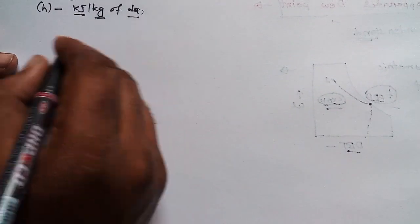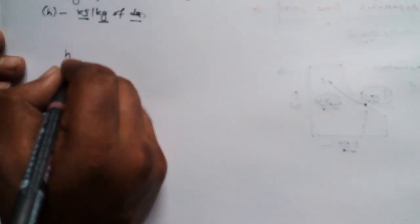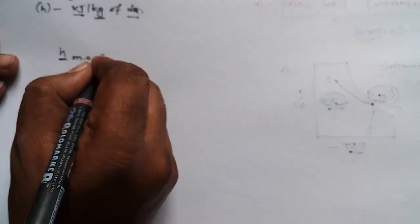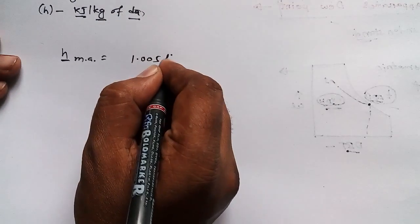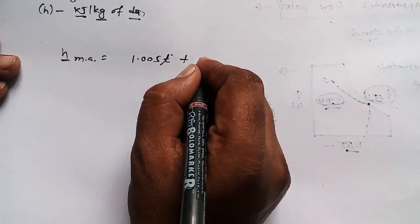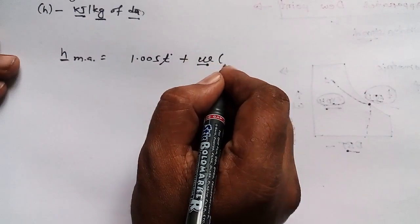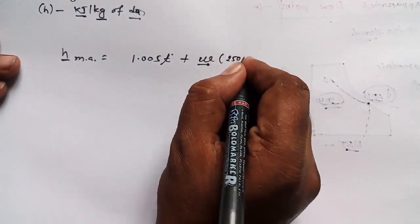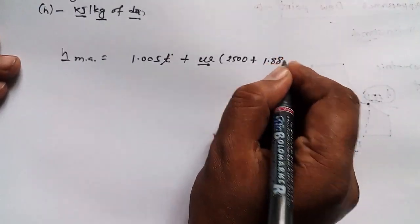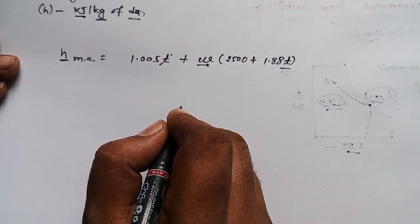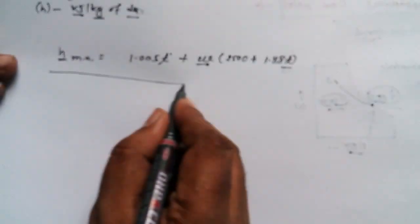So let's calculate it. We have a formula to find out enthalpy of moist air: 1.005*t plus omega (that is specific humidity or humidity ratio) times (2500 plus 1.88*t). This is the formula for finding out enthalpy of moist air.